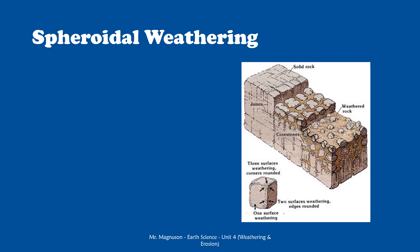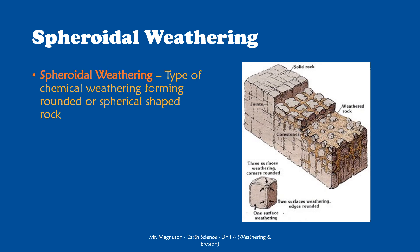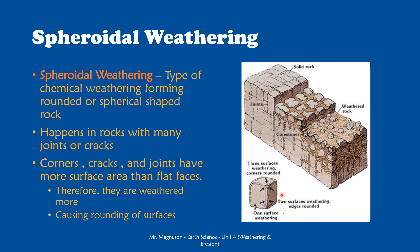Next, I want to talk about spheroidal weathering. The word spheroidal means having to do with spheres. This is a type of chemical weathering that forms rounded or spherical-shaped rock, and it happens in any rock with many joints or cracks. Looking at this diagram, a single block of rock has corners with more exposed surface area than the flat faces, so the corners weather the quickest. As they weather, they get rounded. Because rock with cracks has lots of corners, those corners get weathered first and become rounded, causing sphere-shaped objects — simply because corners and edges have more surface area than the flat faces.